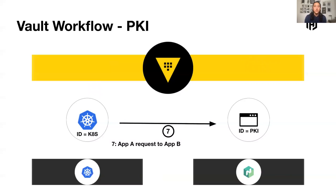Now that I have my certificate, I can do my request back and forth. This is super popular these days — actually providing the certificates for your service mesh. If you're using Consul as a service mesh, for instance, you can reach out to Vault and have it manage the certs for you. But it doesn't have to be Consul — it could be Istio, Linkerd, or any of the rest of the tools out there. If you want Vault to be the central authority for your PKI certs, you can do that. We also have integrations with vendors like Venafi, so if you want to distribute publicly facing PKI certificates or TLS certs, we can wrap the API flows through Vault and reach out to those external vendors to grab those publicly signed or CA-signed certificates.